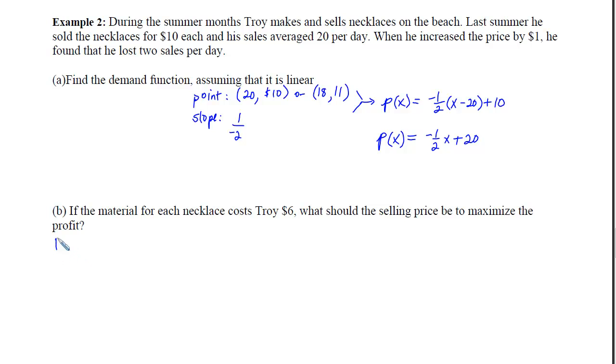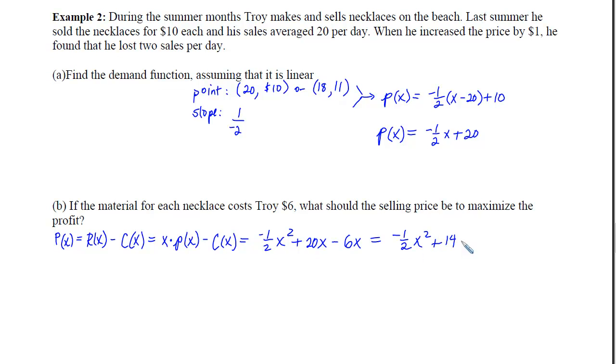With part b now, we want to maximize the profit. So we have to remember that the profit is the money that comes in minus the cost. Well, the revenue is the number of necklaces Troy's selling times the price that he's charging. So if we multiply the price he's charging times x, we get a negative 1 half x squared plus 20x, and now we've got to subtract the cost. Well, the material for each necklace costs him $6. So if he makes x necklaces, the cost will be 6 times that x. If I simplify this now, I'll get a negative 1 half x squared plus 14x.